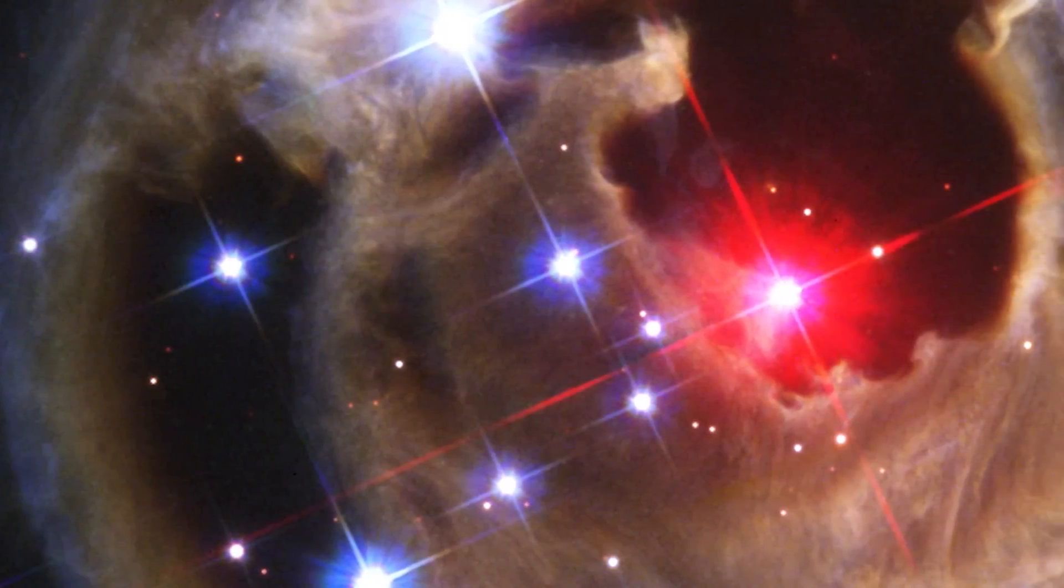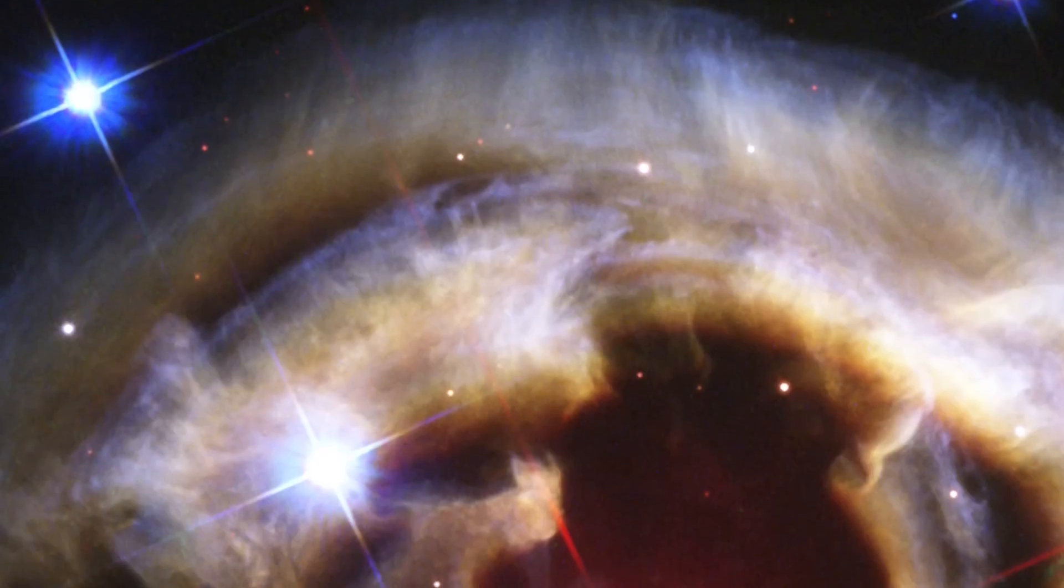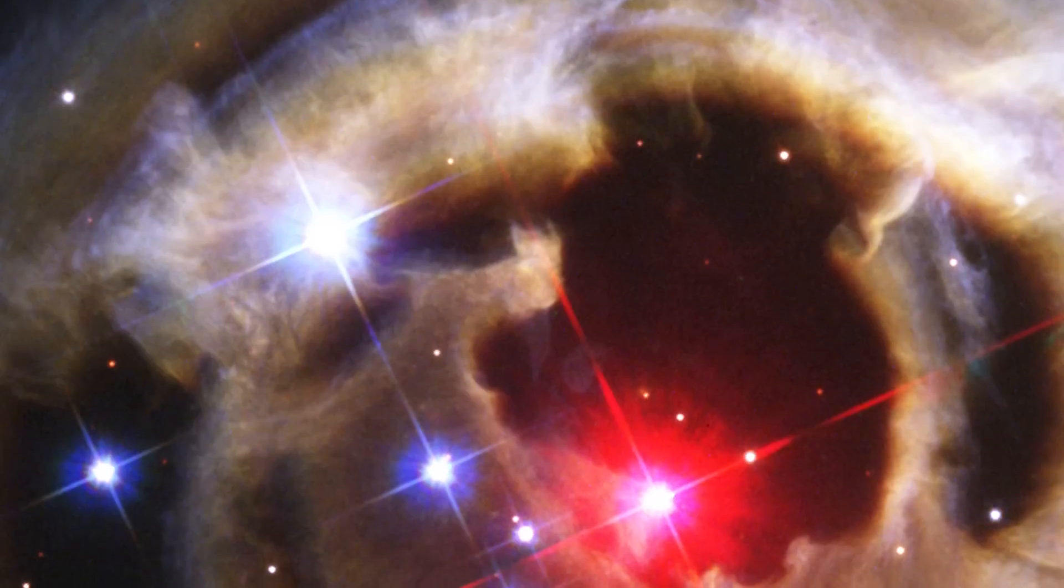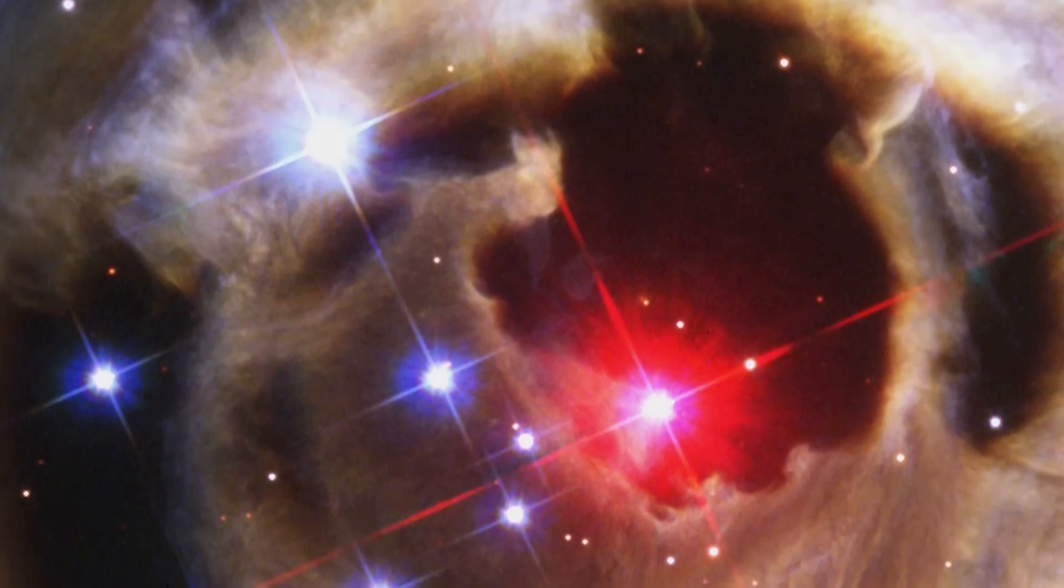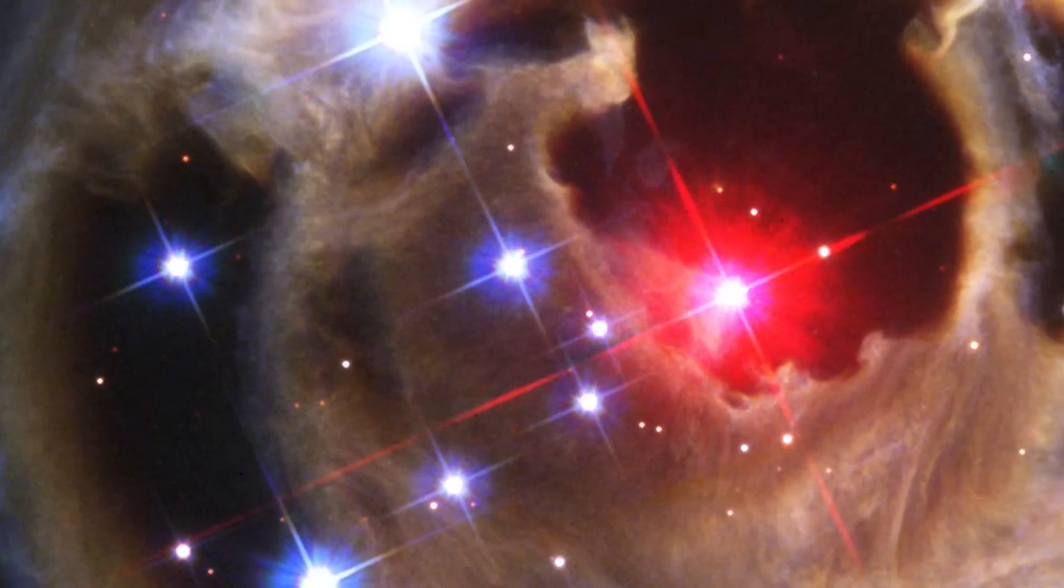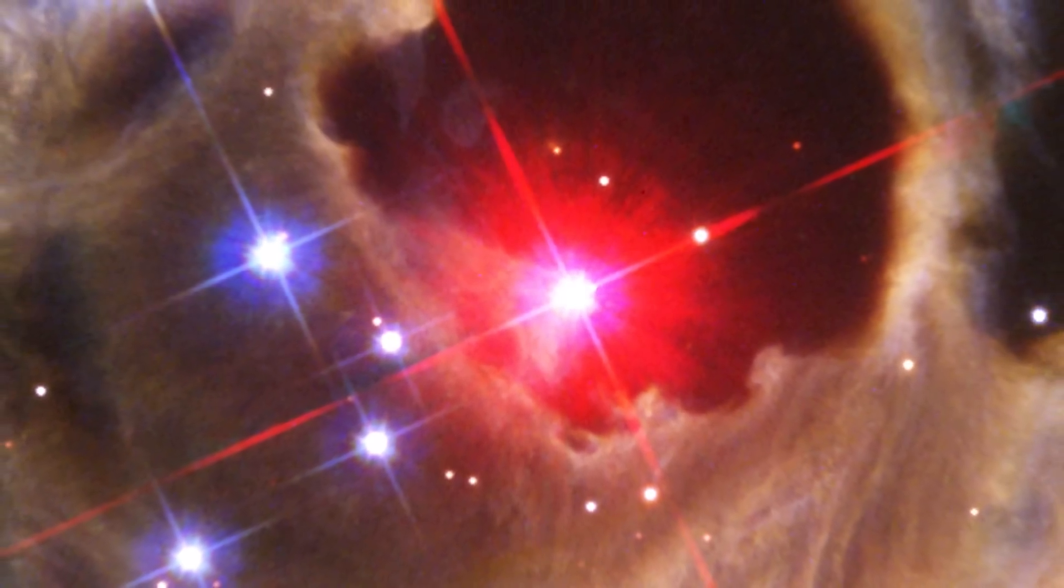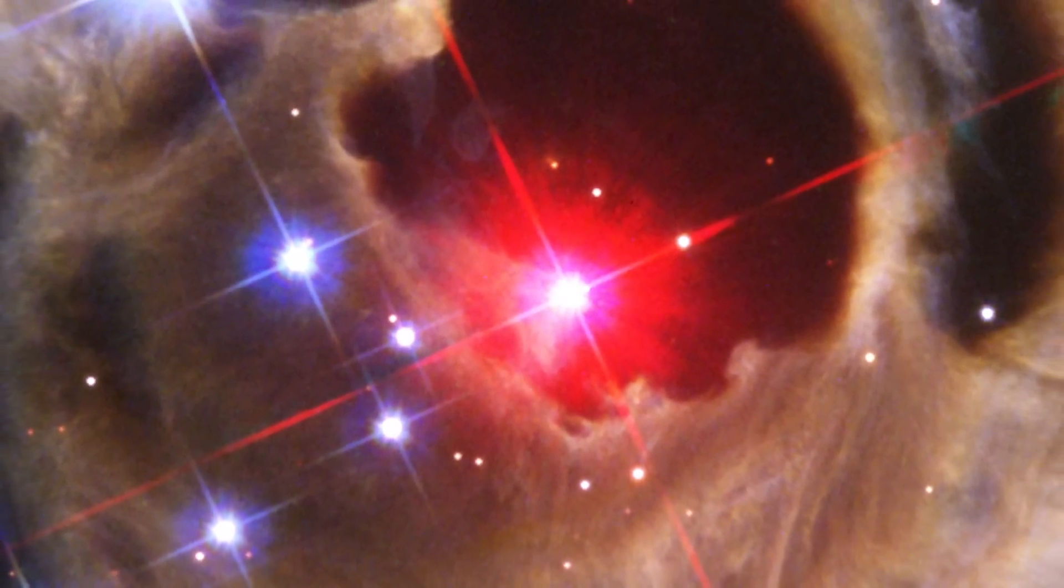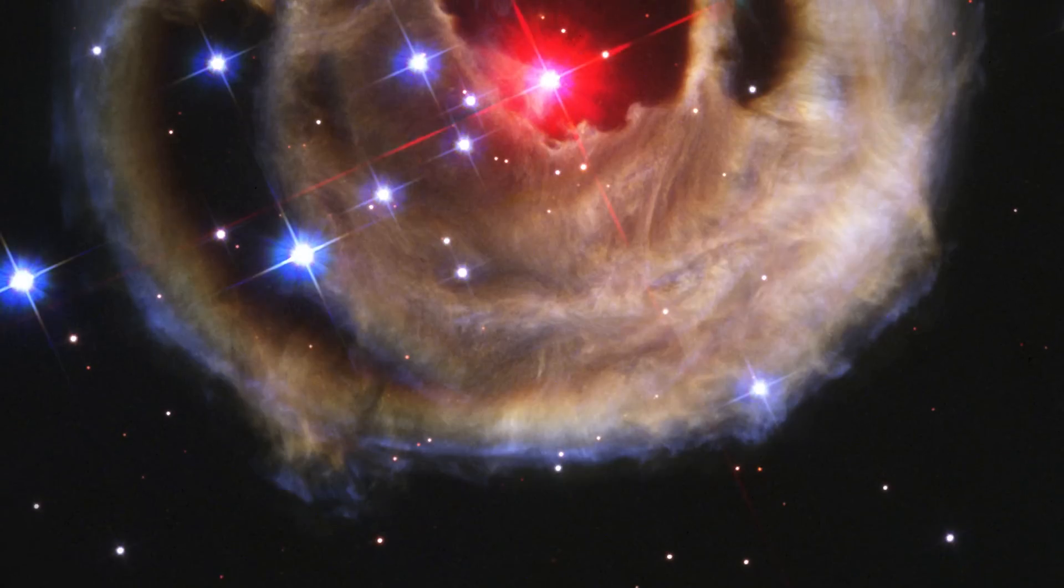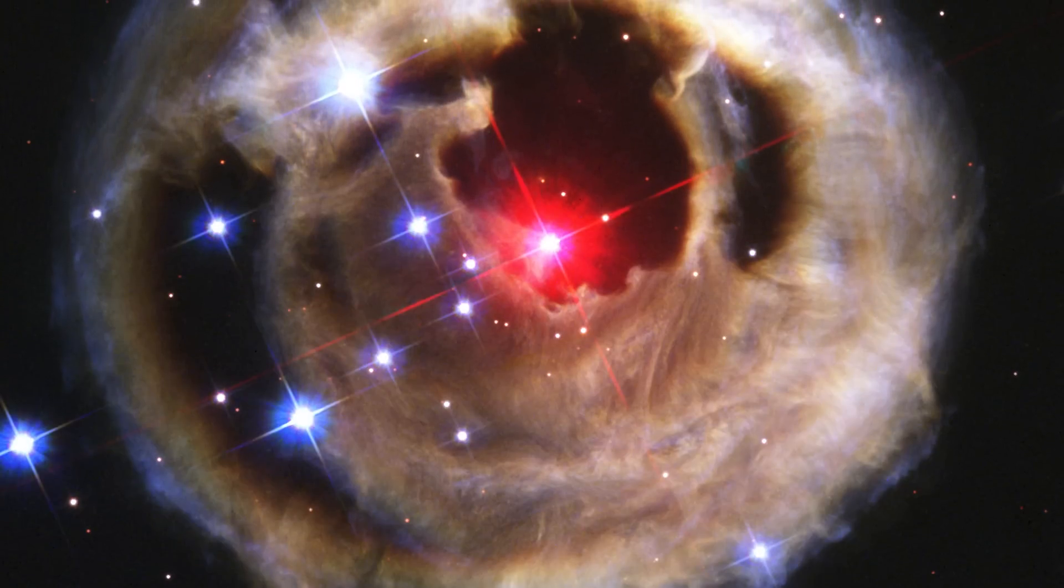In this image, you see a star named V838 Monocerotis. V838 Monocerotis's outburst was somewhat similar to that of a typical nova, a normal star that dumps hydrogen onto a compact white dwarf companion star. The hydrogen builds up until it spontaneously explodes by nuclear fusion, like a titanic hydrogen bomb. The explosion exposes a searing stellar core with a temperature of hundreds of thousands of degrees Celsius.